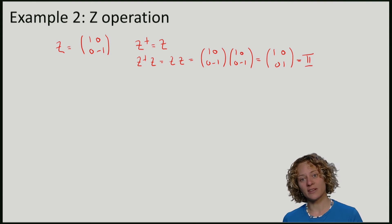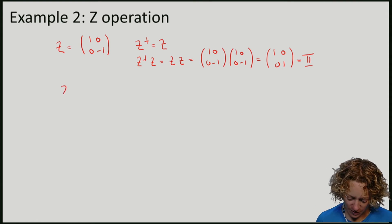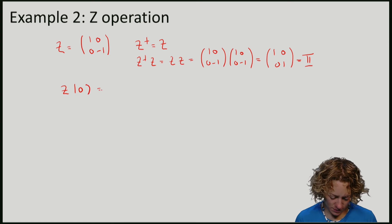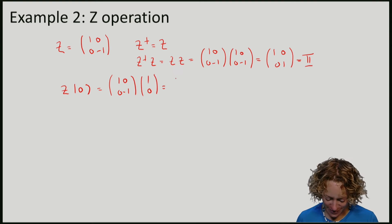What is the effect of Z on the standard basis? So let's compute Z applied to 0. So what we get is the first element is 1 and the second one is 0, so we don't do anything at all. It preserves the 0 state.